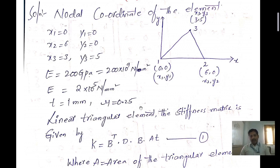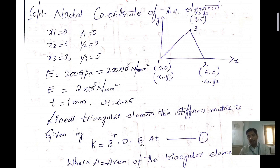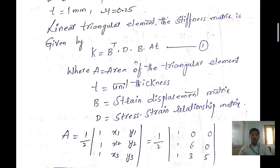For the linear triangular element, the stiffness matrix formula is K = Bᵀ·D·B·A·t, where Bᵀ is the transpose of the strain-displacement matrix, D represents the stress-strain relationship, B is the strain-displacement matrix, A is the area of the triangular element, and t is the thickness. First we need to find the value of A.